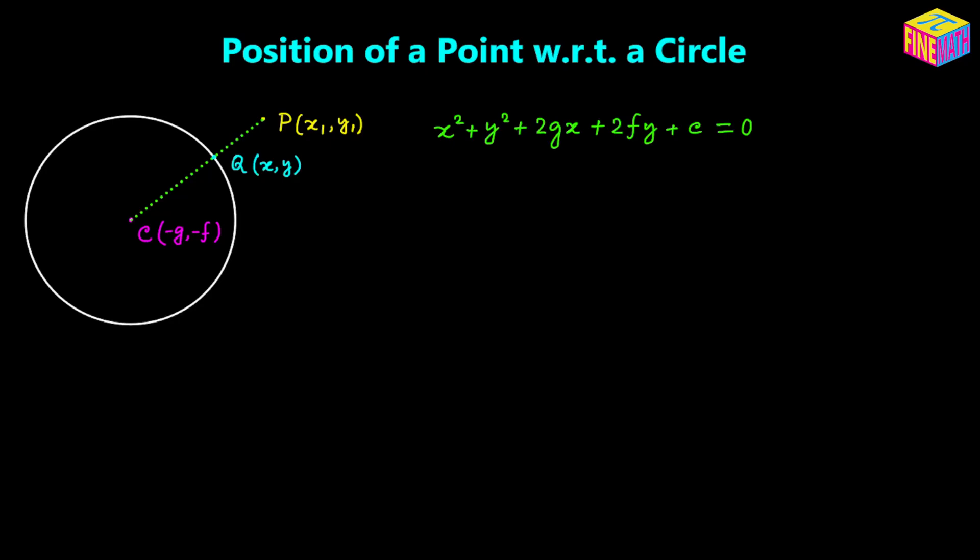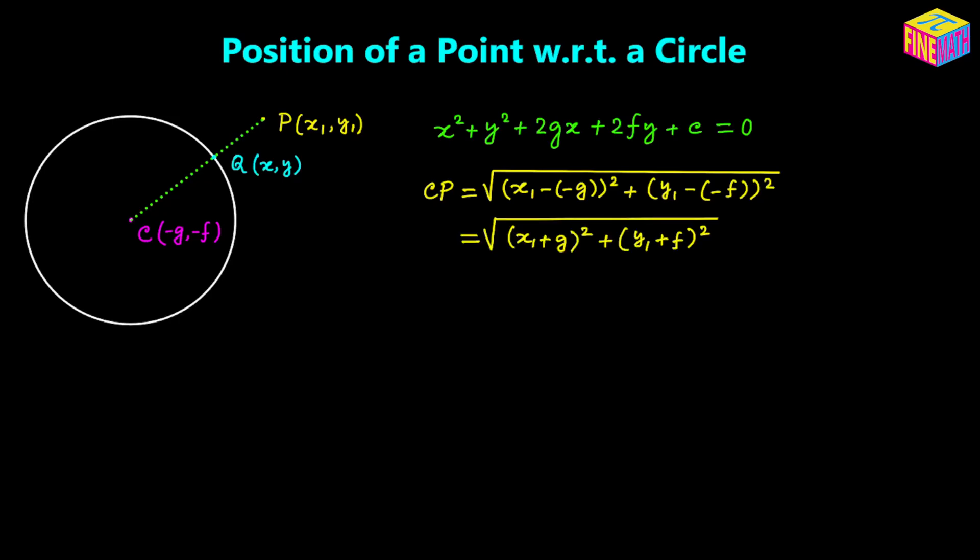Because we know the coordinates of point C (the center) and the coordinates of point P given as (x₁, y₁), we can calculate the length of CP using the distance formula: CP = √((x₁ + g)² + (y₁ + f)²). Also, the radius of the circle equals √(g² + f² − c), based on the general equation.